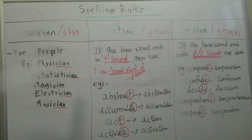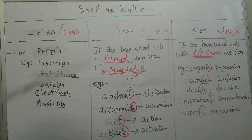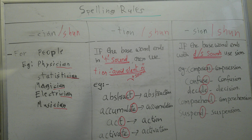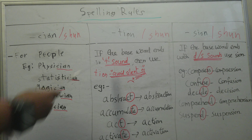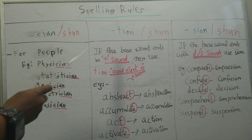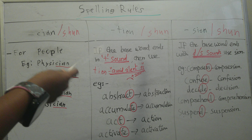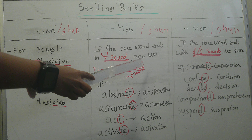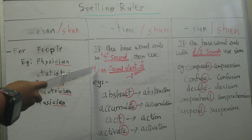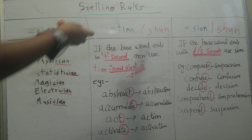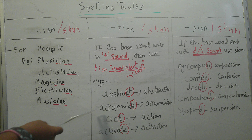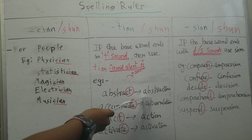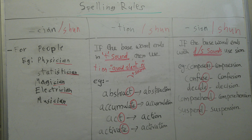Now let's go into T-I-O-N, the second suffix. If the base word ends in the 't' sound, then we use T-I-O-N. We also avoid the silent 'e' that sometimes comes at the end. The T-I-O-N suffix makes the 'shun' sound, as you can see.